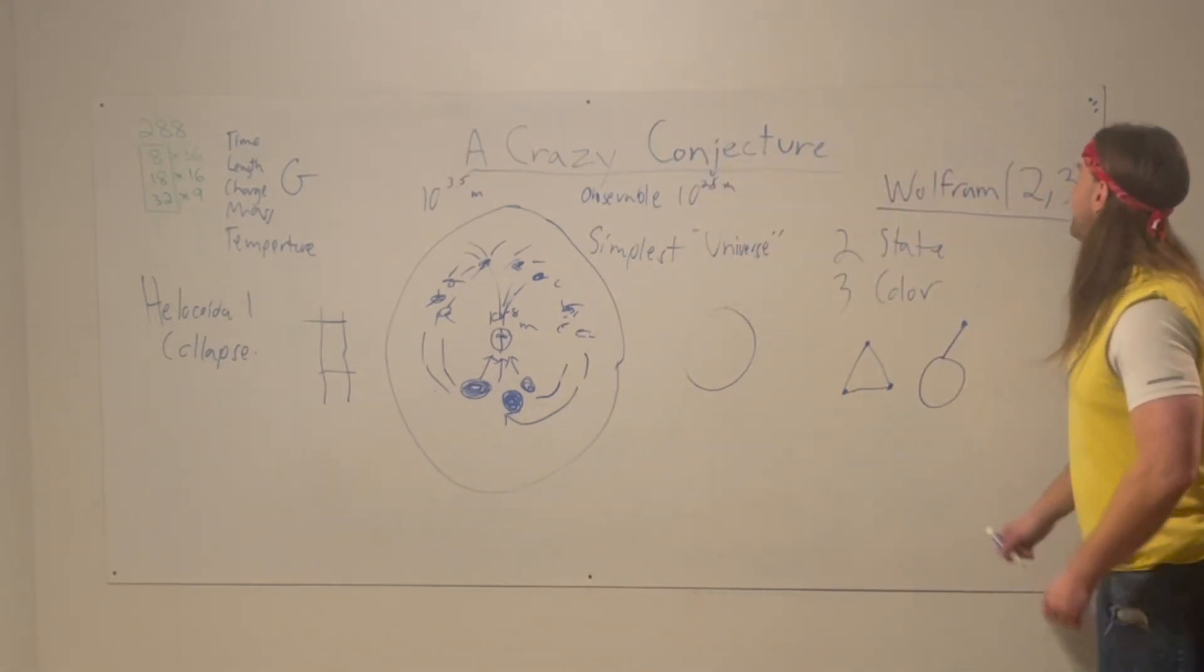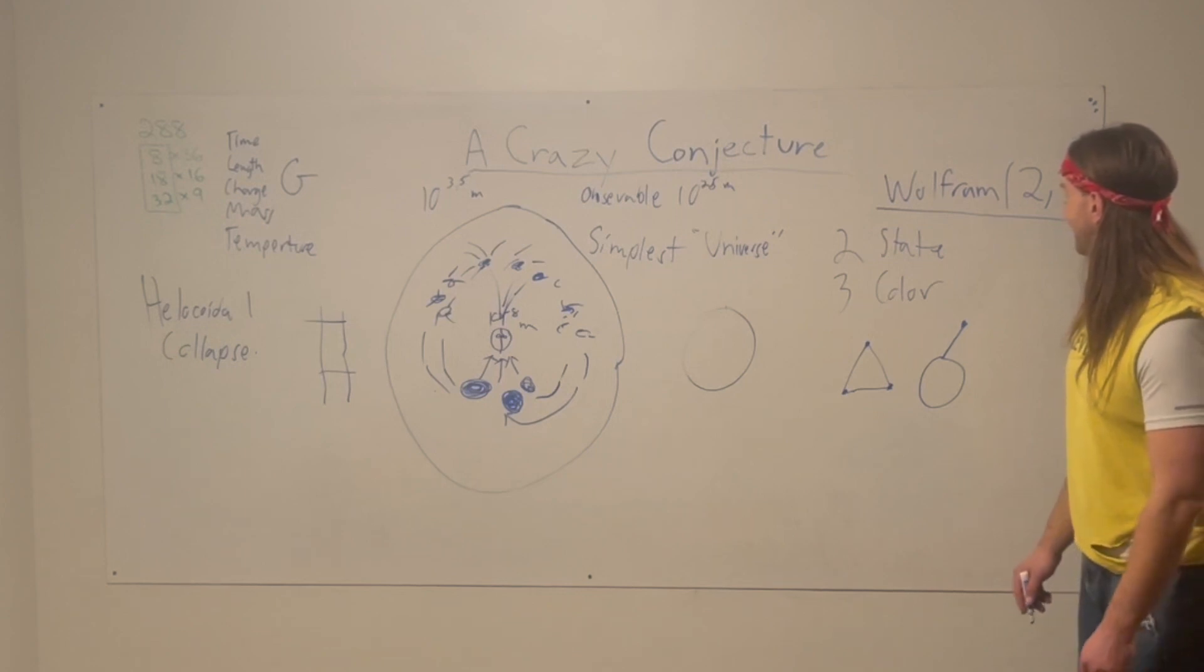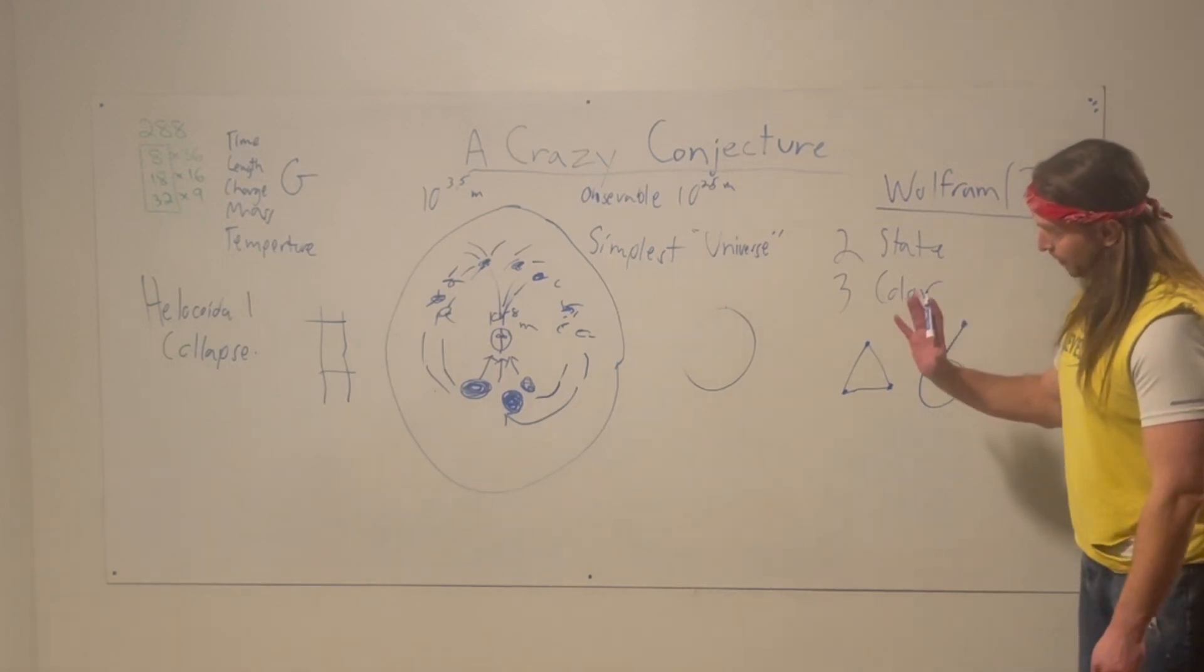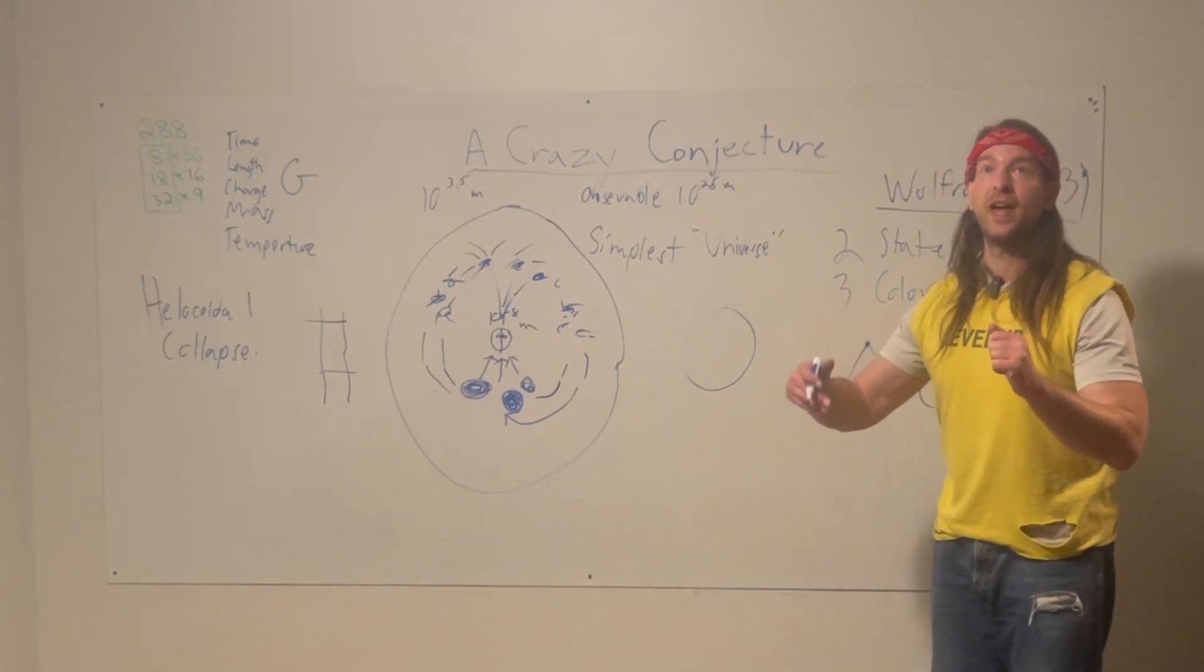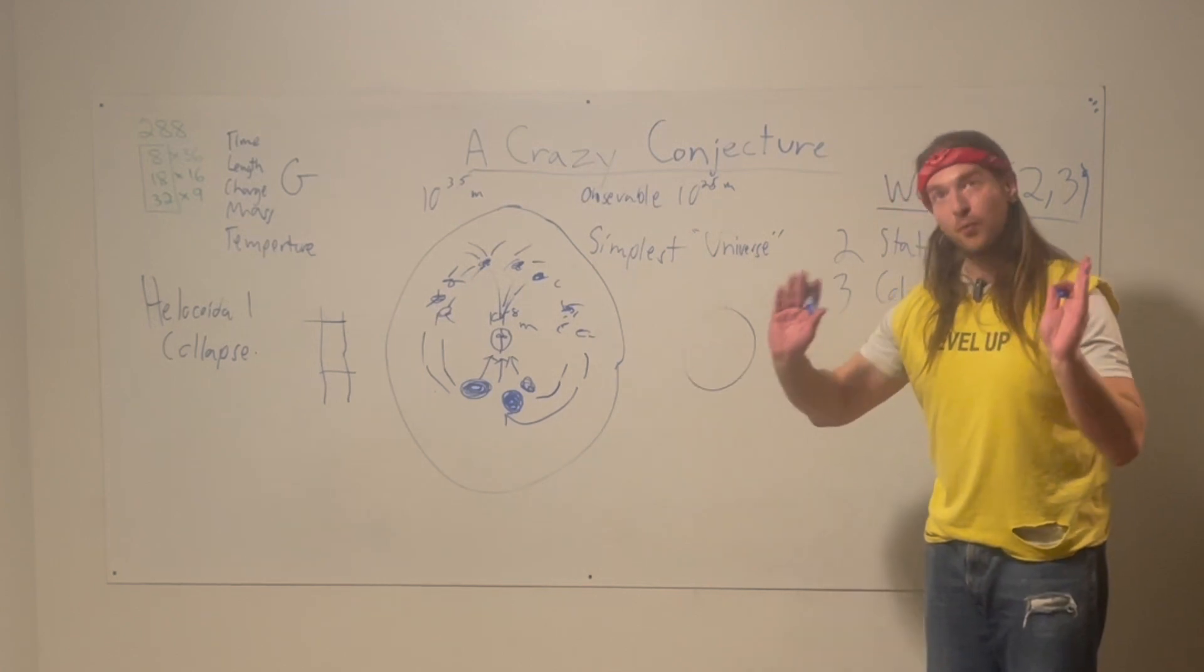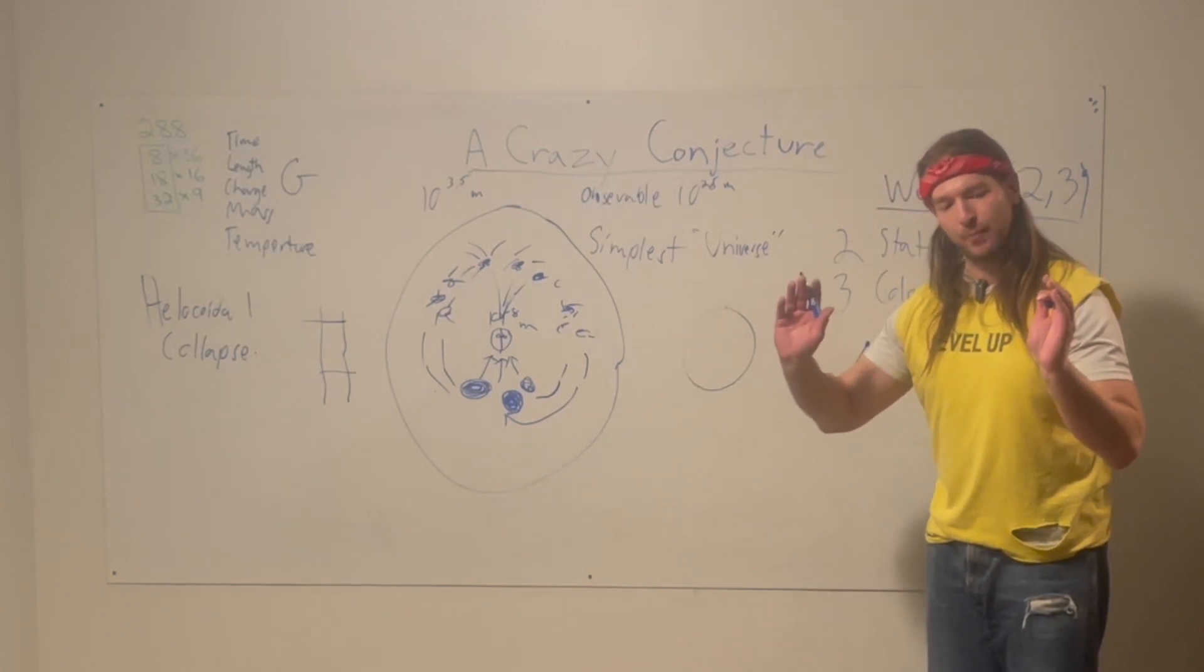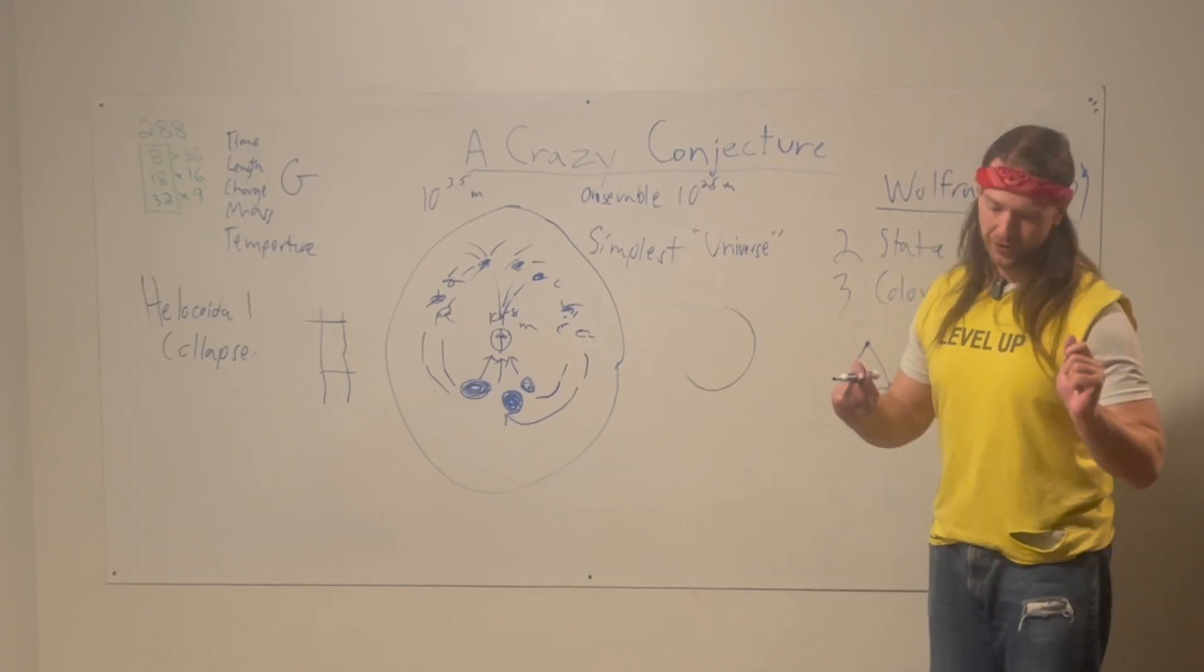The interesting thing about Adam Smith's machine over here, the Wolfram 2-3 machine, is the 2-2 machine has been proven it is not universal. So then the next step would be, is a 2-3 machine universal? Now, the main controversy, to my knowledge, comes in here, where people disagree that it's universal, is the machine restarts.